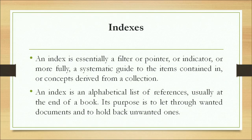After catalogs, we will talk about indexes. An index is also a kind of tool of an information retrieval system that helps users in retrieving required information. An index is essentially a filter, pointer, or indicator — a systematic guide to items contained in a book or document. It is an alphabetical list of references usually at the end of a book, whose purpose is to let through wanted documents and hold back unwanted ones.